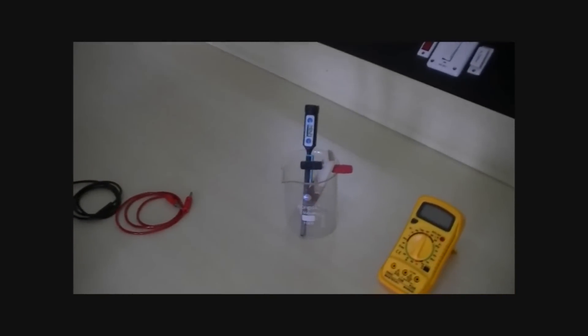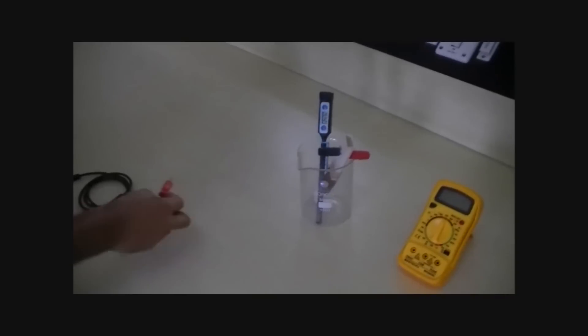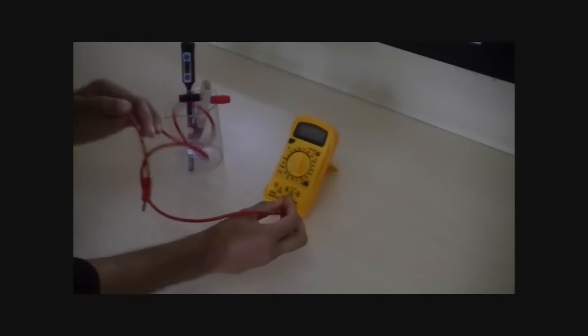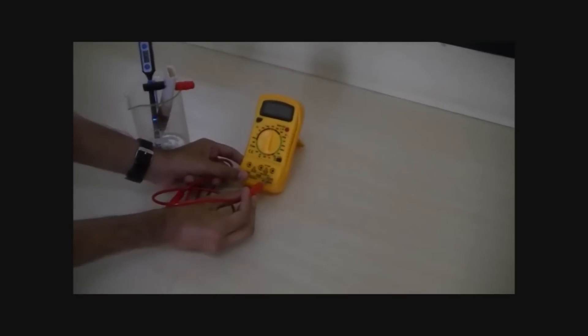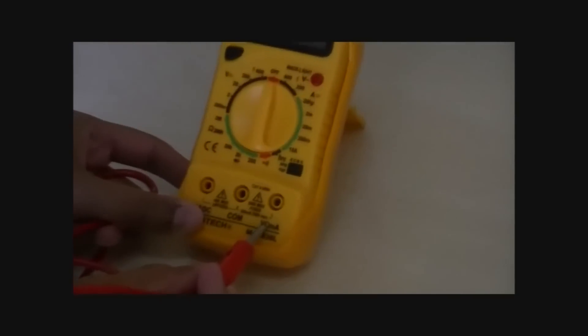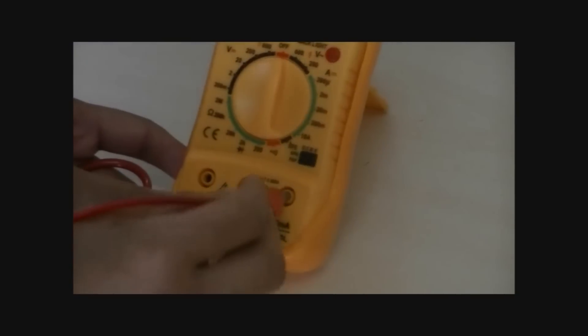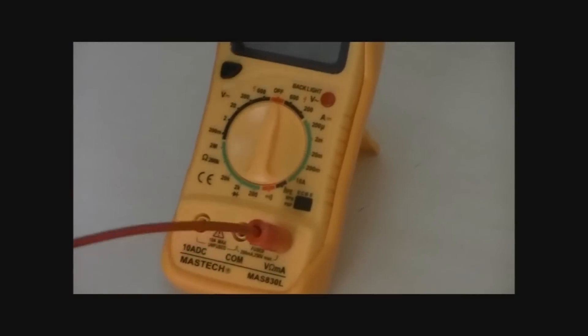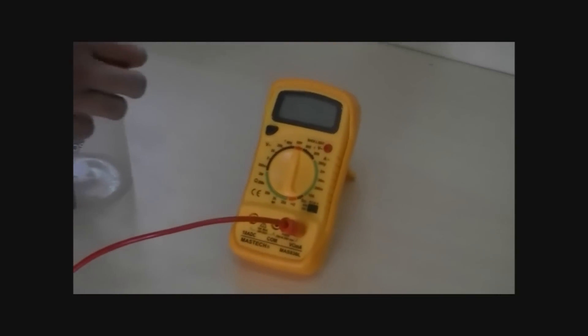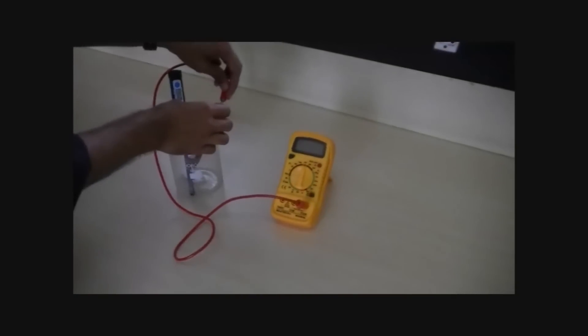To measure the resistance of the copper coil, we will connect the multimeter. Take one connecting wire, connect the terminal next to the ohm symbol standing for resistance to one end of the connecting wire. The other end of the connecting wire is connected to the copper coil.